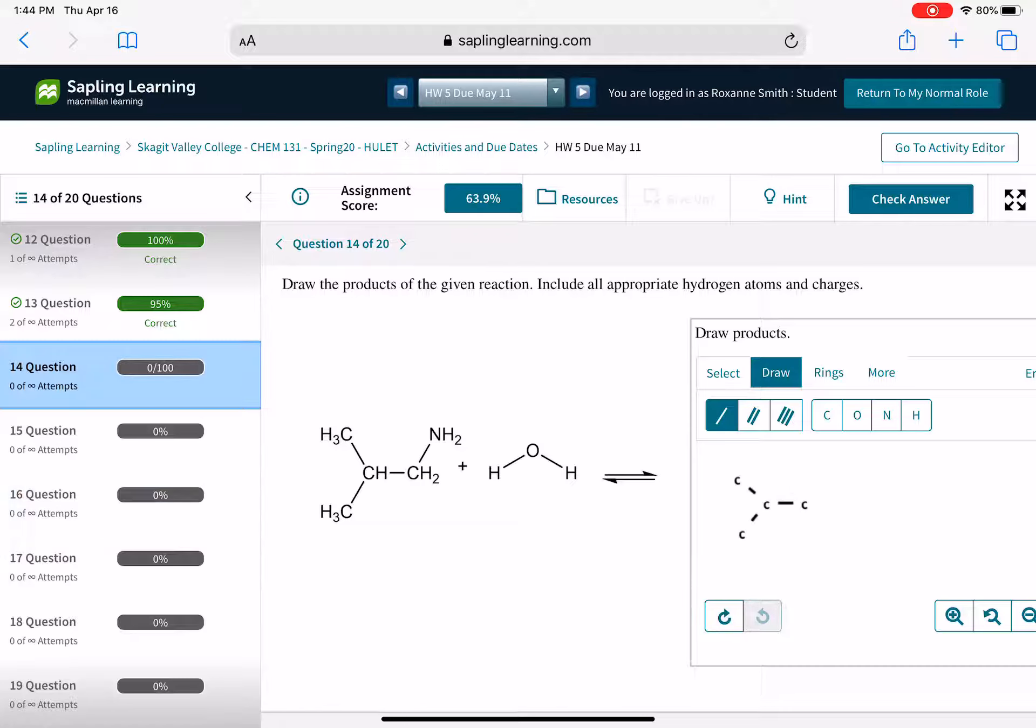So that means that we need to draw both of the products of the reaction, not just the amine. Don't forget that you have this plus hydrogen button that helps you add hydrogens to your carbons very quickly. It also will add hydrogens to your nitrogen quickly. Your nitrogen started with two hydrogens, which means now it has three. Don't forget that there's a positive charge on that nitrogen.